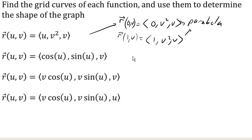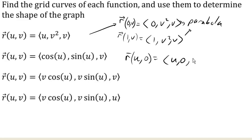Now let's try one where v is held constant. If we let v equal 0, we get the curve (u, 0, 0). This one is a line where y and z are both 0 and only x varies — so this describes a line.